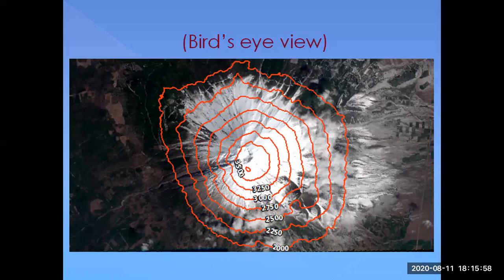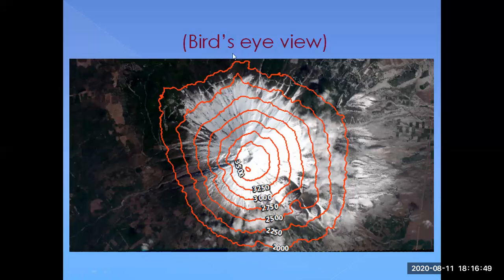So what happens is: these points all share a particular constant value of the dependent variable — height — while having varied values of the independent variables — latitude and longitude. I am mapping combinations of latitudes and longitudes that give a constant height of 2000 meters. Only the points lying on that red jagged line are at exactly 2000 meters; other points nearby are not.